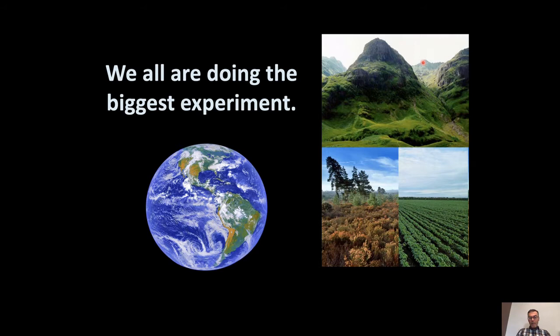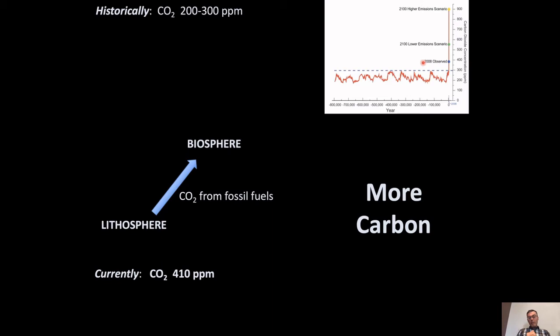As you probably all know, we're all doing the biggest experiment. It turns out this is a very unscientific experiment — there is no replication and there are no controls. Historically, there would have been about 200 to 300 ppm of carbon dioxide in the air. Currently, through our experiment, we've brought that up to about 410 ppm, and this goes on increasing even despite some slowdown in activities due to COVID. What we do daily is burn fossil fuels, adding CO2 to the biosphere. We are also adding more and more nitrogen — this starts around the time of the Industrial Revolution and goes on.